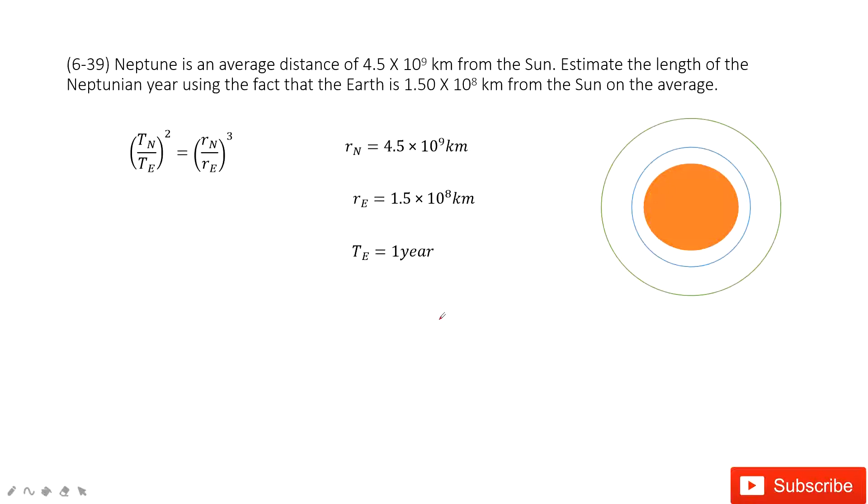In this one, this is still a simple application about Kepler's law. You can see, this is the Sun, this is the Earth, rotate around the Sun, and then Neptune rotate around the Sun in circular motion. In this case,